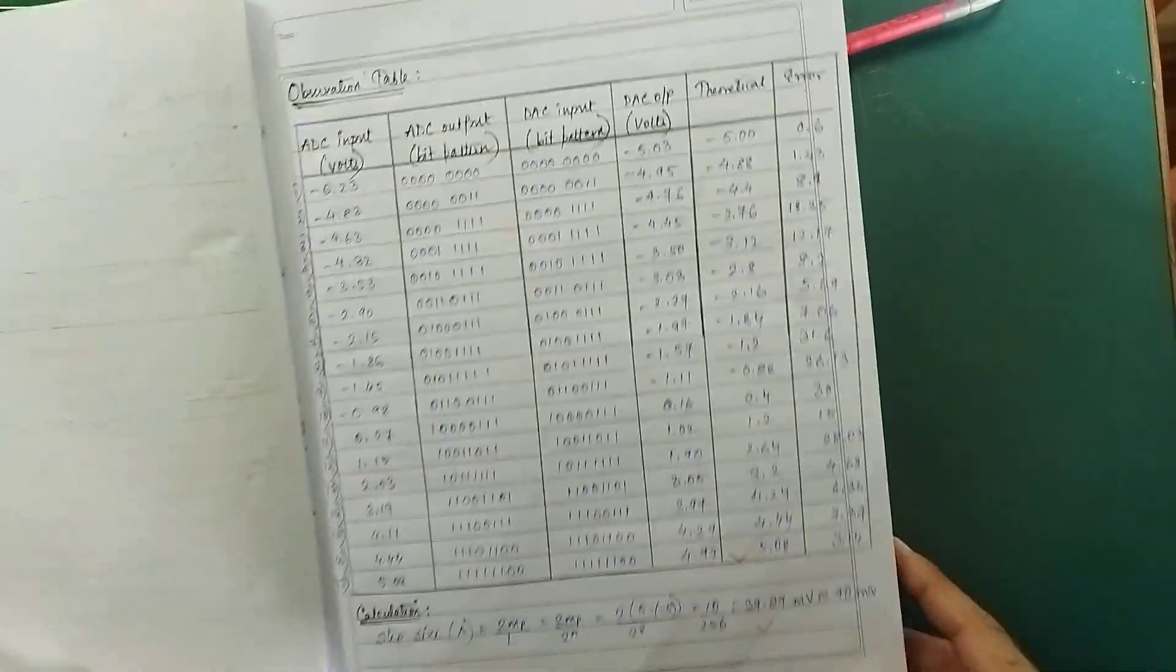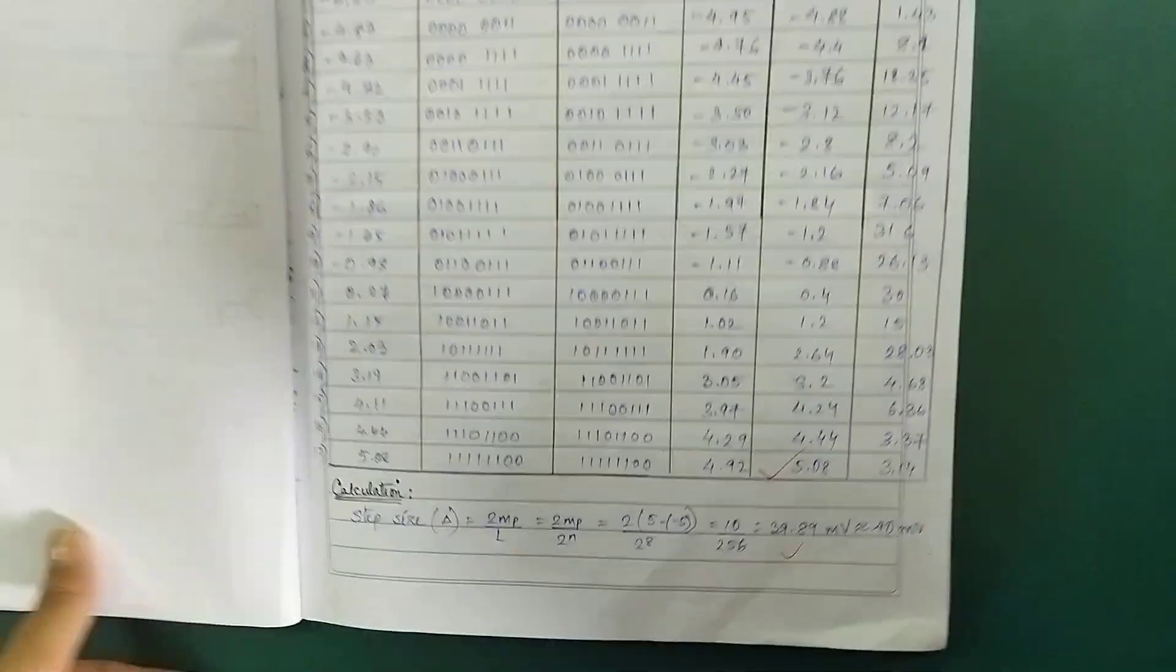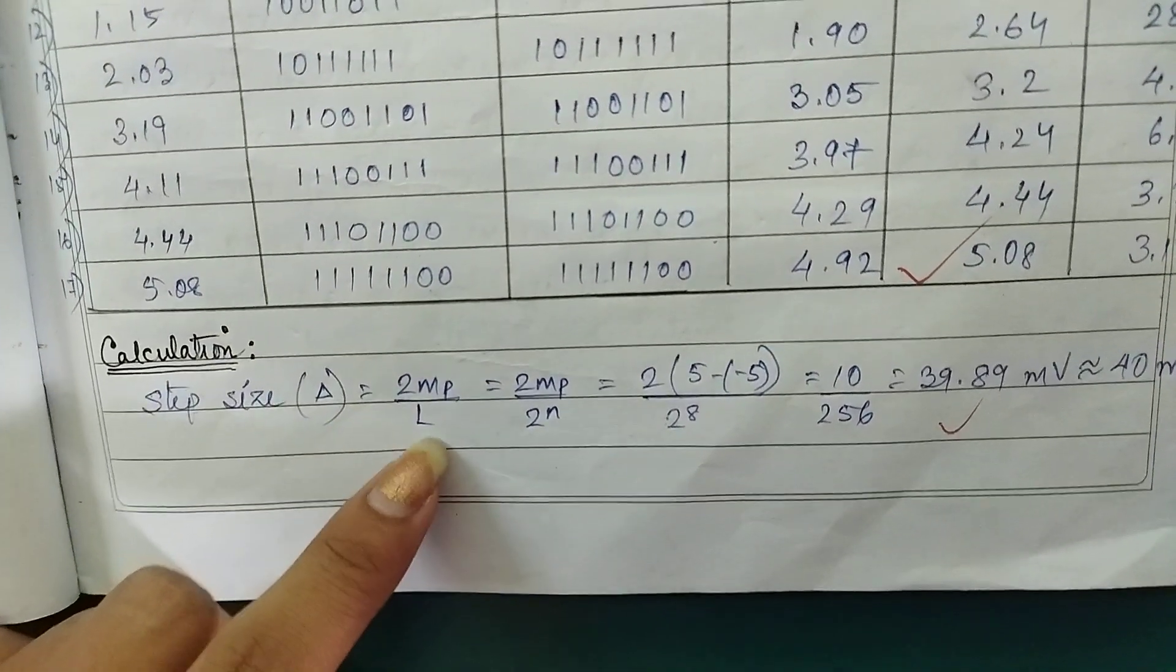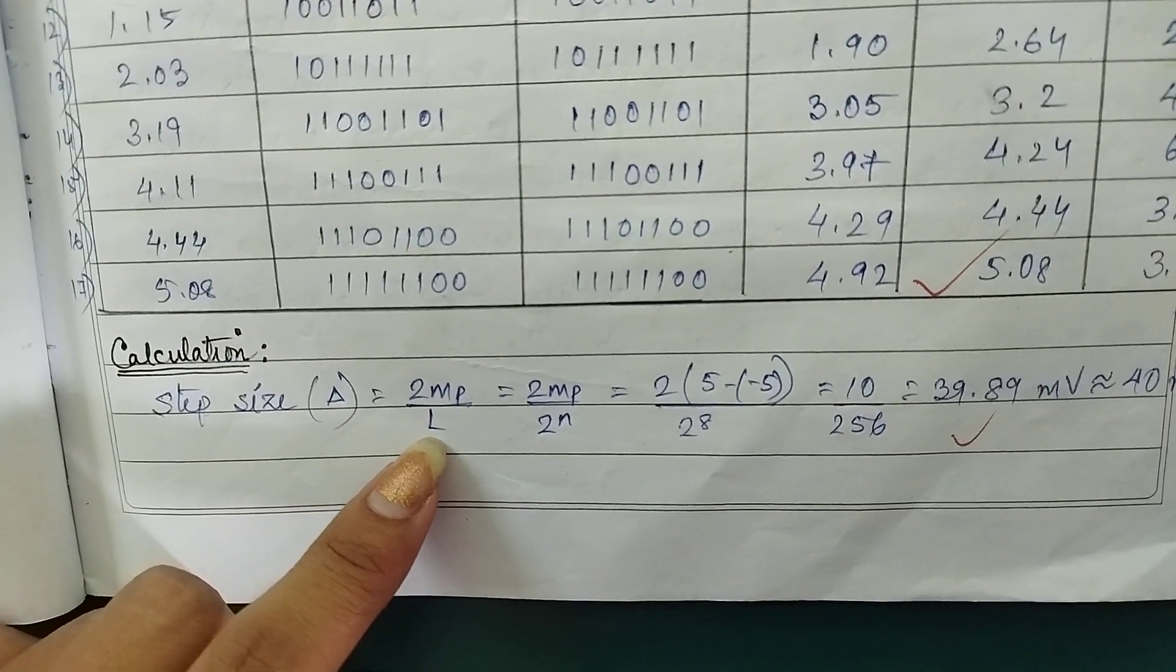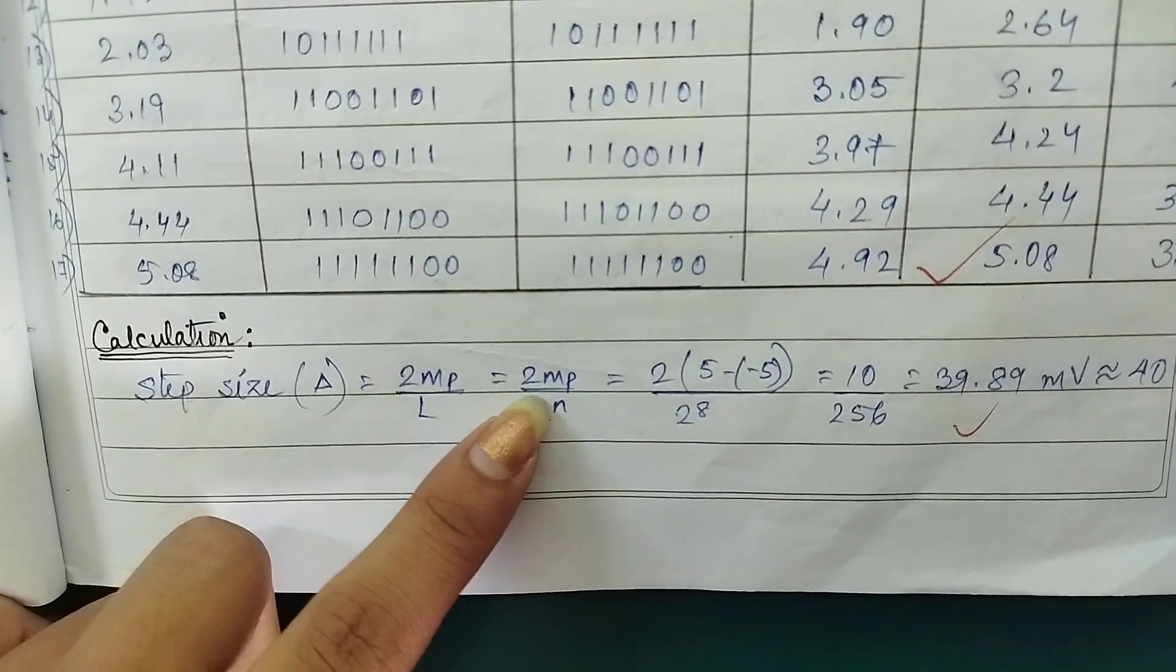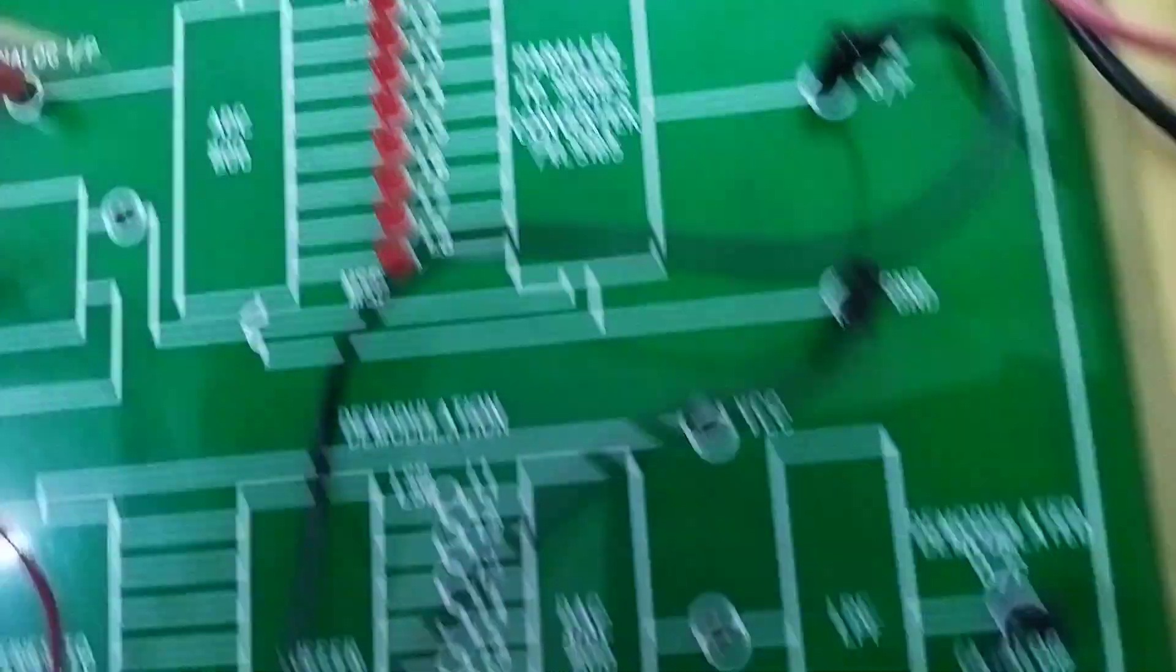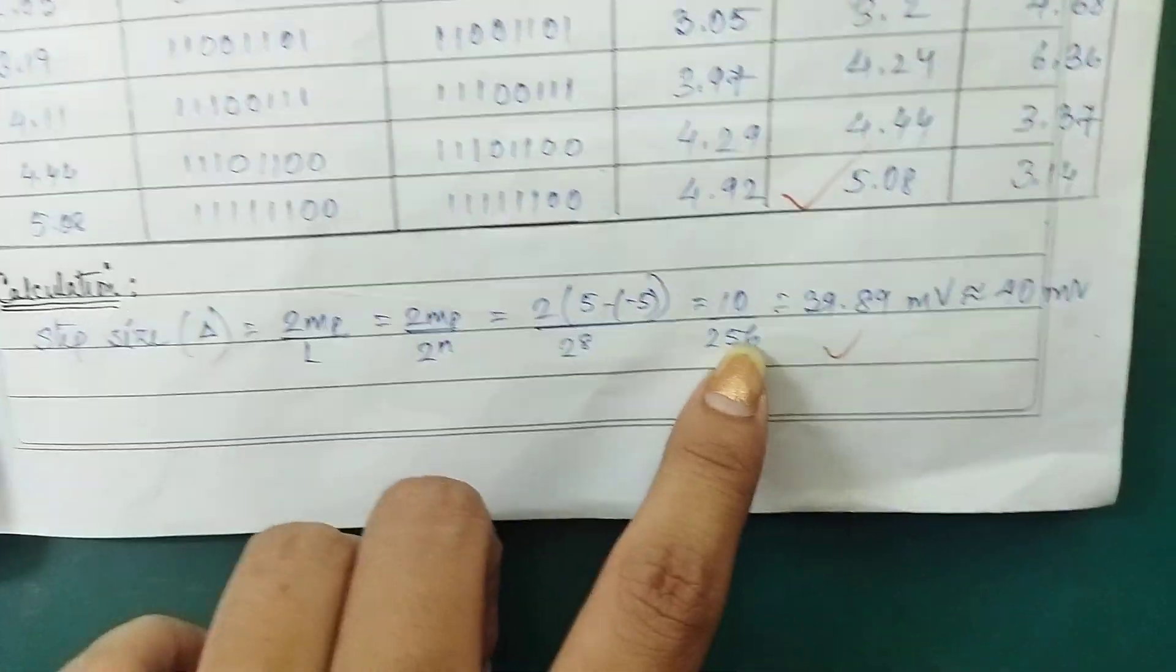Let's see the DAC output. This is the step size calculation. The step size is 2MP by L. The M is the peak value of the input signal. The L is the number of levels. The N is the number of bits to encode each sample. Here N equals 8, so L equals 256.